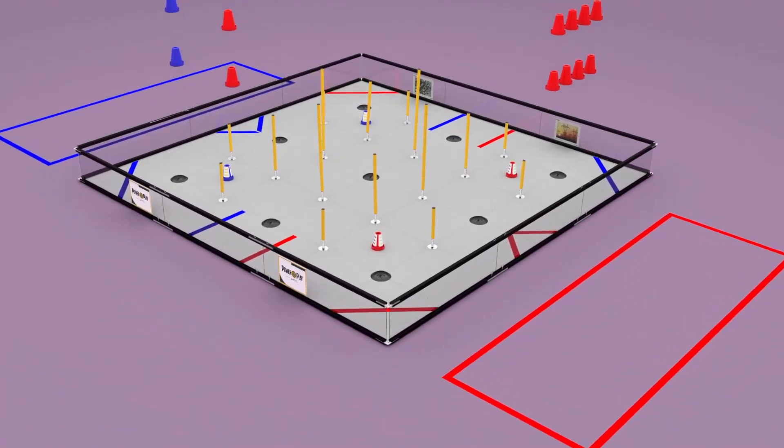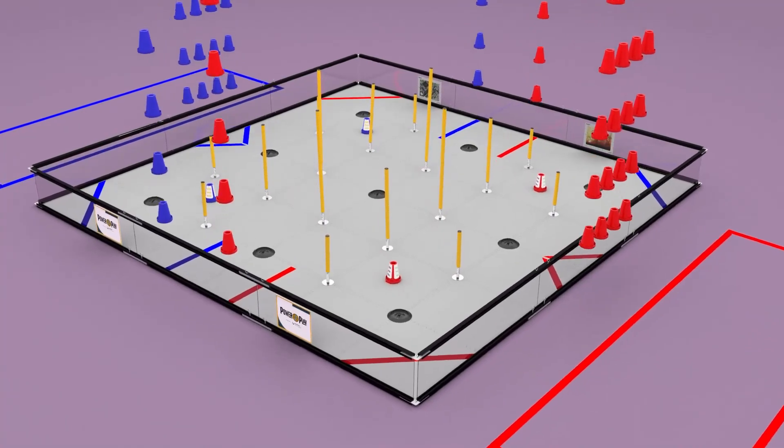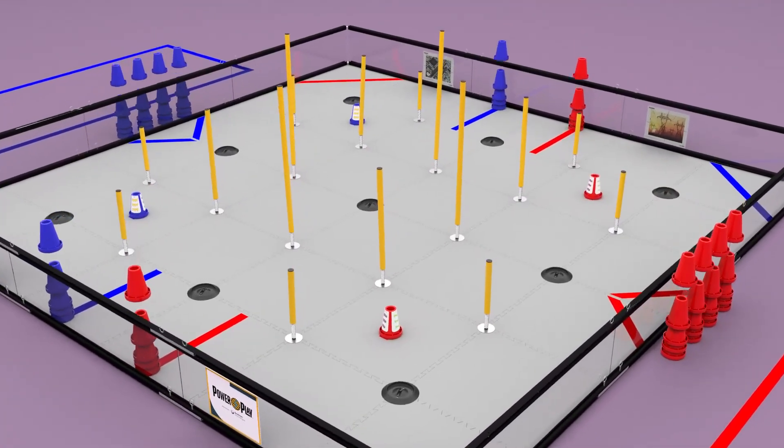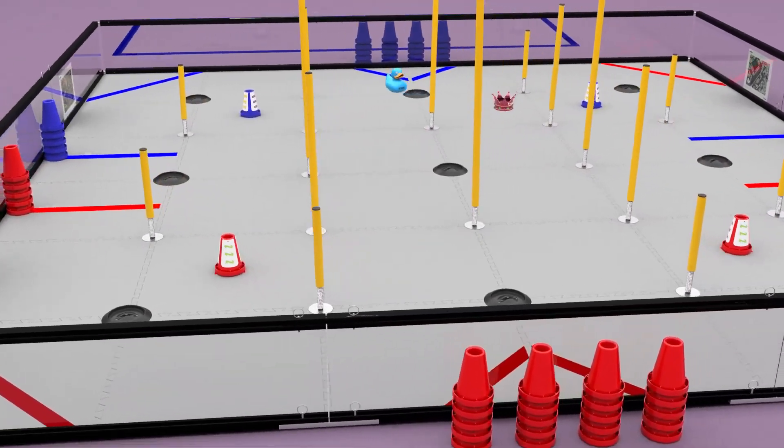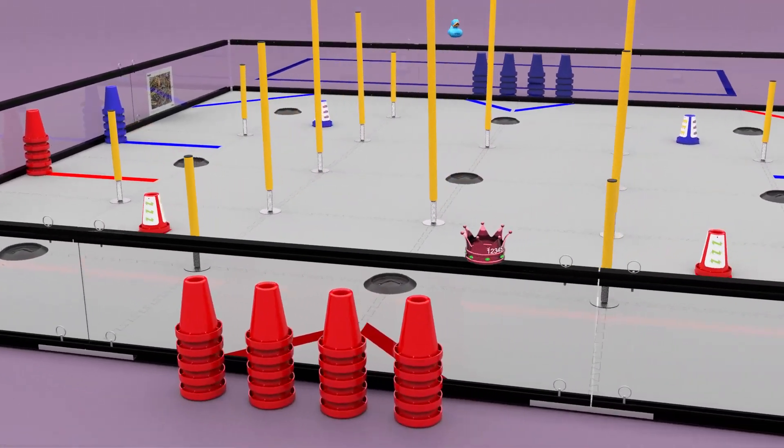Before each match, cones are stacked in the substation storage areas and inside the playing fields. Custom beacons are also placed in the substation storage areas.